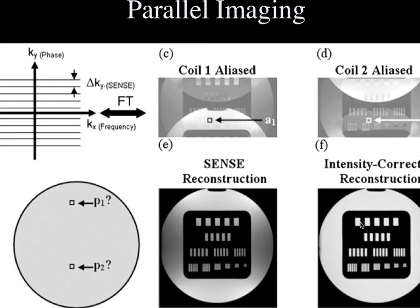What parallel imaging does — and there are many different ways to do this — is take less time by requiring fewer lines of k-space, which leads to wrapped images. We can then unwrap them using mathematical equations that exploit the spatial information from the phased array coils to create unwrapped images. There are many mathematical tricks to do this; they're all variations on this same theme.